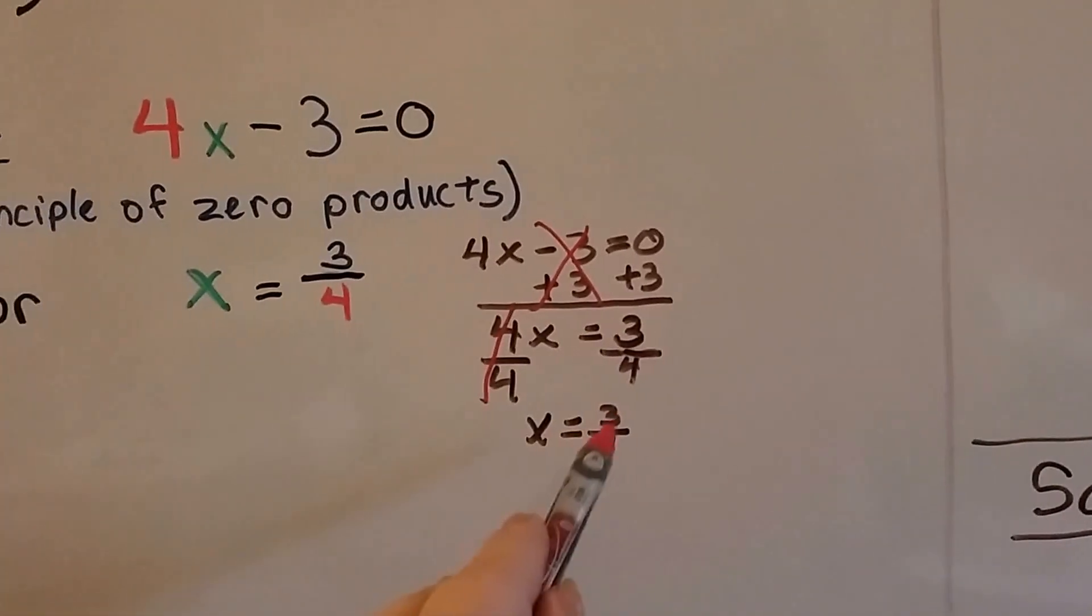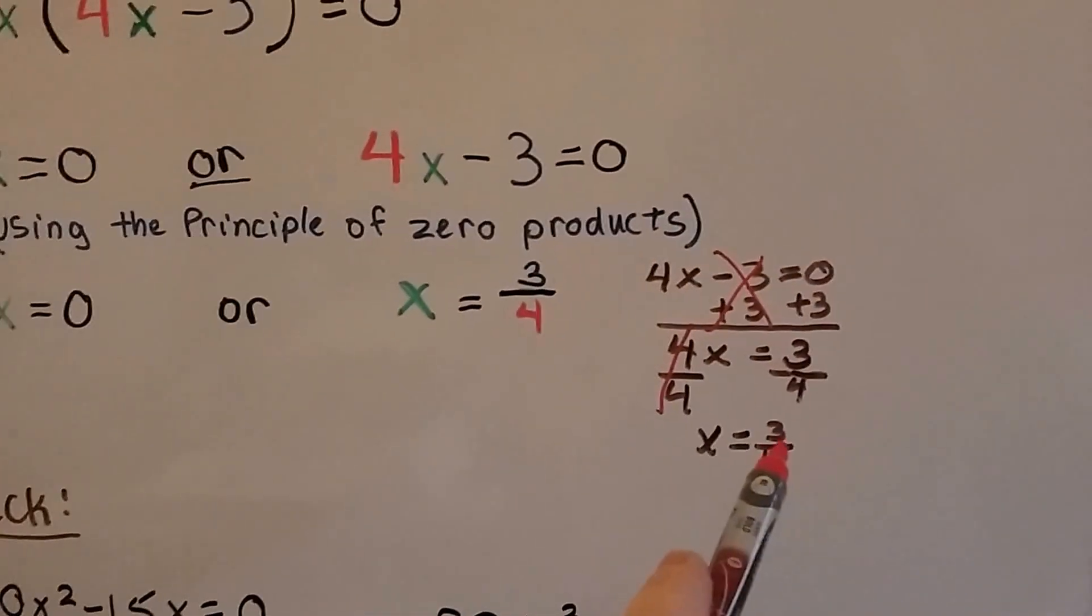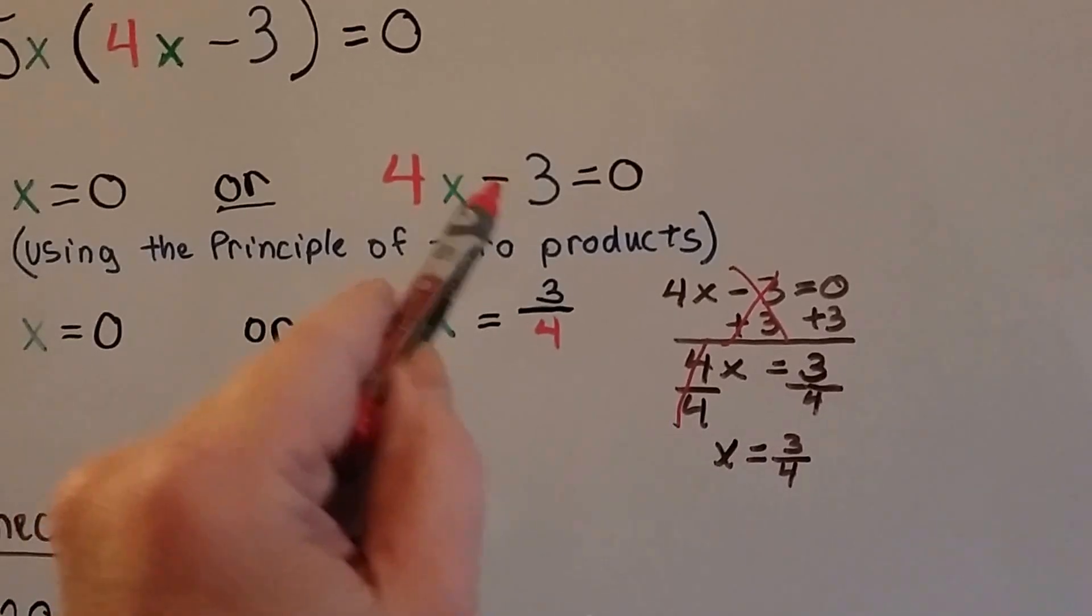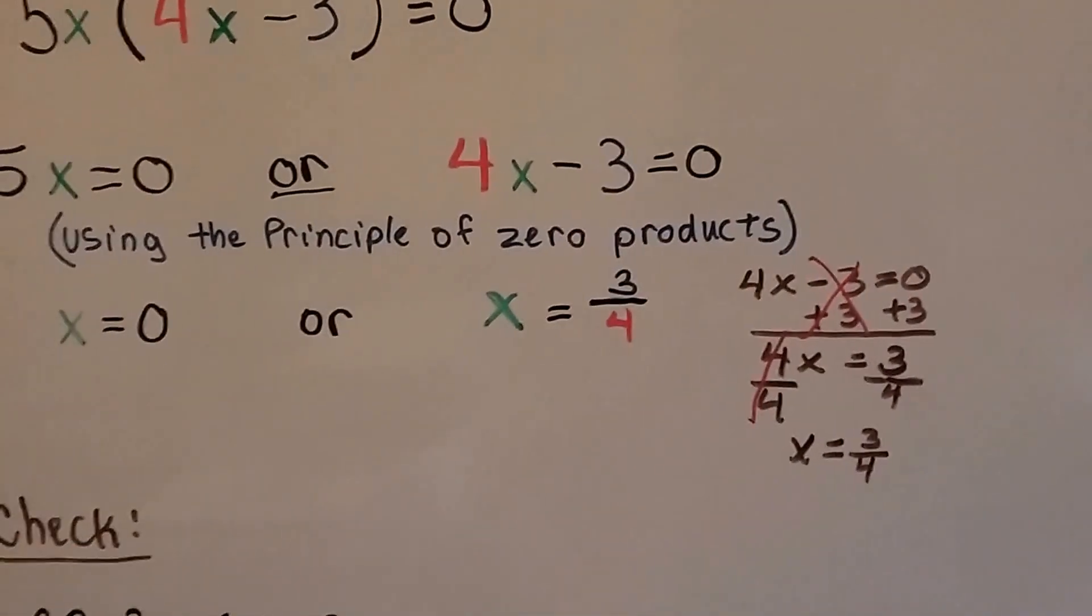So we've got x equals 3 fourths. That would be a negative 3 fourths if this was a positive 3. But because it's a negative 3, it came out as a positive 3 fourths.